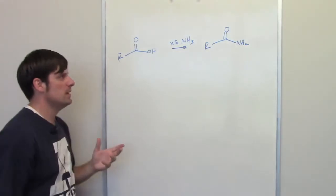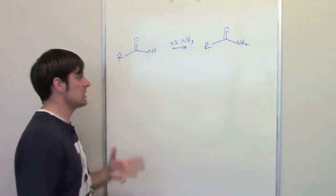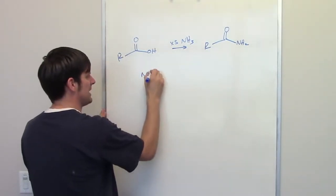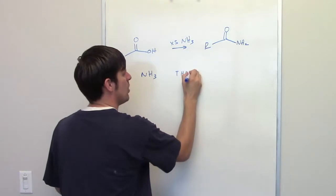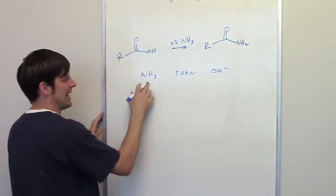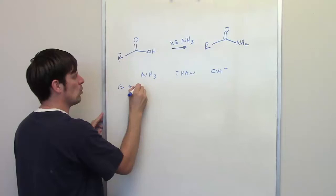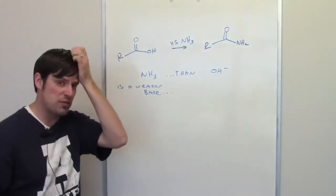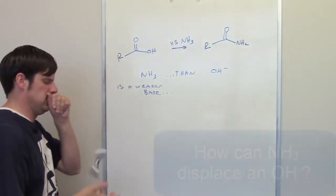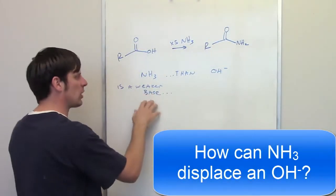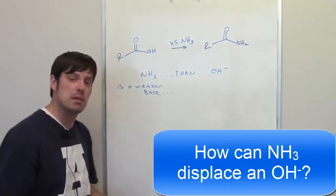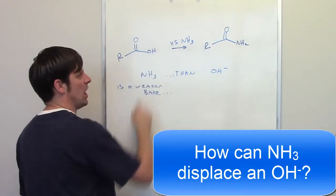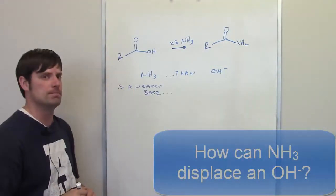Now the question that Eric asked is, well here it is: NH3 is a weaker base than OH minus. I'll go and write that down: NH3 is a weaker base than OH minus, and that is an absolute fact. Here's the question: if NH3 is a weaker base, in other words less reactive than hydroxide OH minus, then how in the world can NH3 displace an OH minus in this type of reaction?